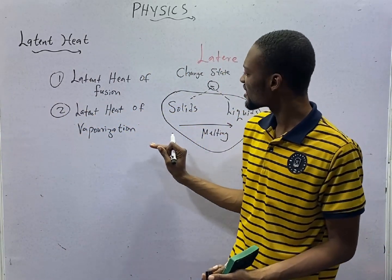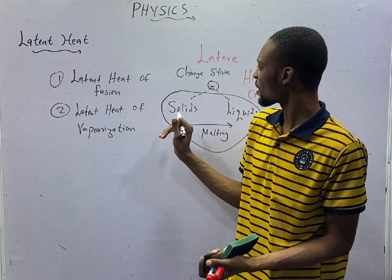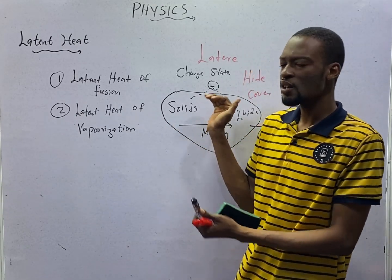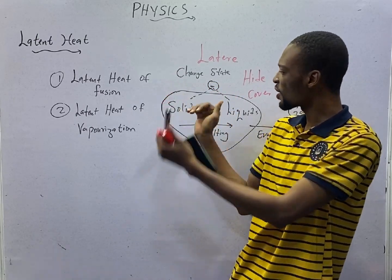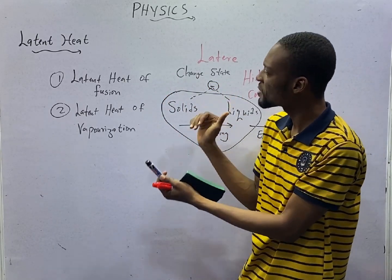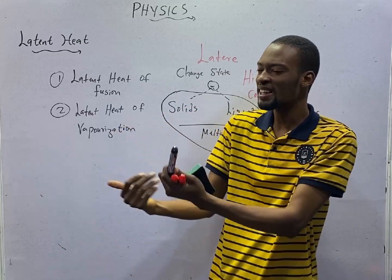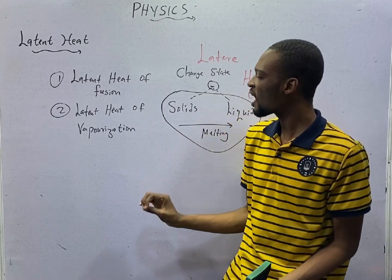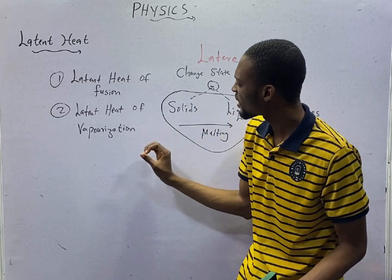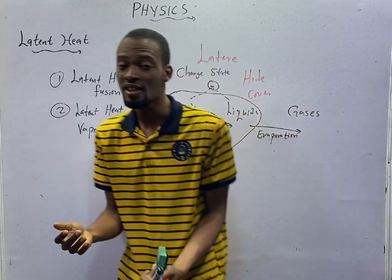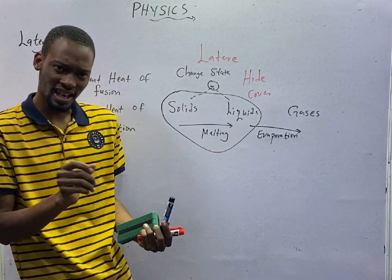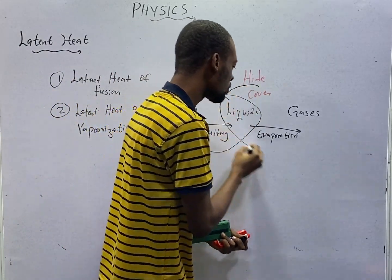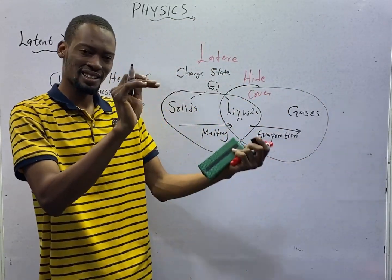So, if energy is applied to change matter from solid state to liquid state without raising or decreasing the temperature of the substance, we say that extra energy provided is the latent heat of fusion. Latent heat of vaporization is the heat required to change matter from liquid state to gaseous state at constant temperature.